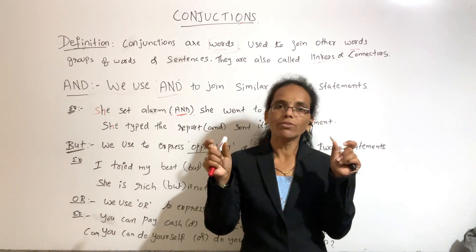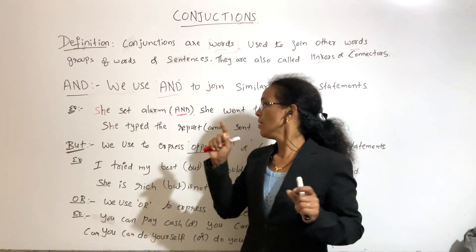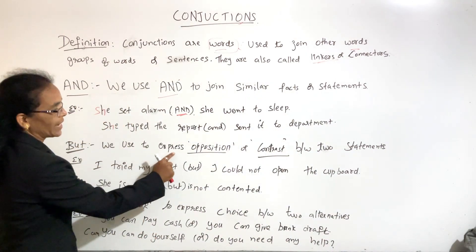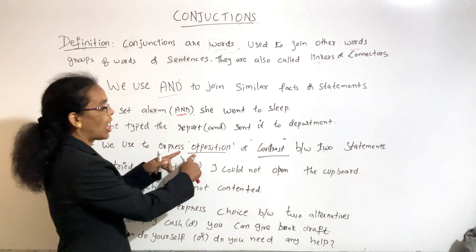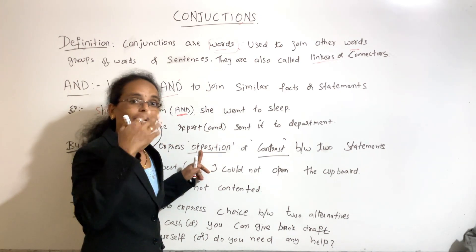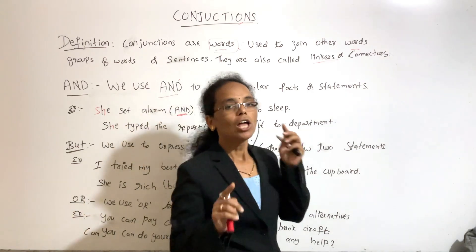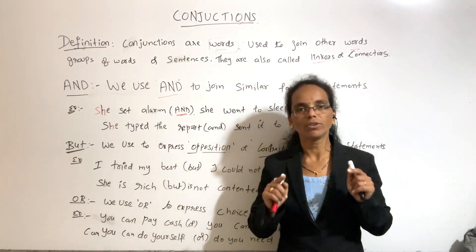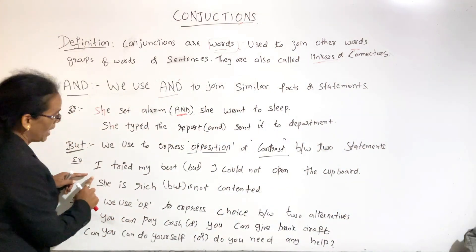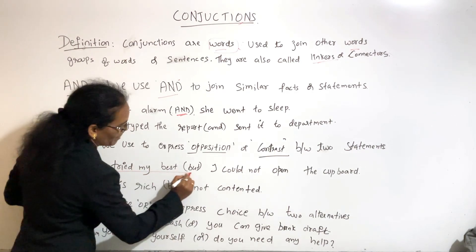So if you have a positive sentence and a negative sentence, you can use the conjunction BUT. We use BUT to express opposite ideas — 'I tried my best' as a positive one, BUT the result was negative.